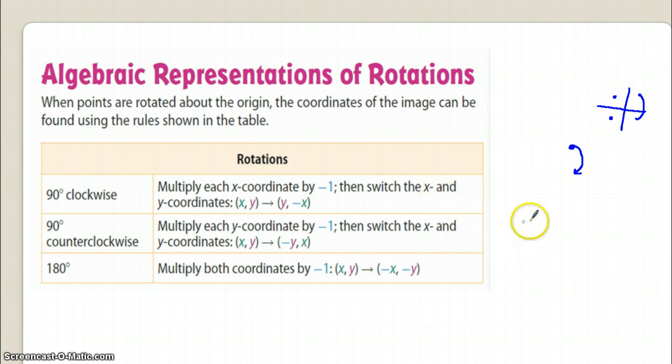Then it says here if you're going to rotate 90 degrees counterclockwise, oh I didn't even finish this up, so I'm sorry. 90 degrees clockwise, you multiply each x coordinate by negative one, then switch the x and y coordinates. So here you have x comma y, you multiply the x coordinate by negative one and then switch the position with y.